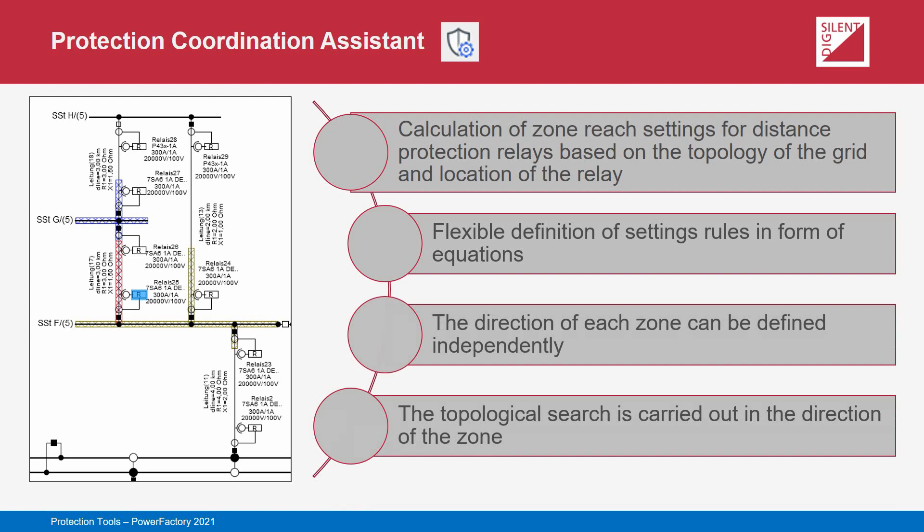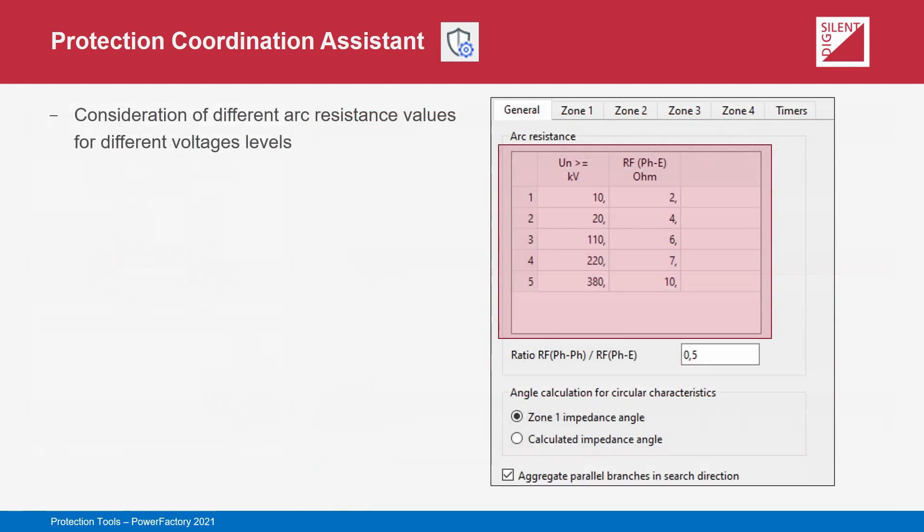For each zone, an operating direction is independently specified and this direction also determines the direction of the topological search. The search needs to be able to determine which relays are expected to coordinate with one another, and this is identified from an orientation setting associated with the CTs supplying each relay. The Protection Coordination Assistant process is carried out in two parts. During the first step, the coordination setting rules are defined, the topological search is carried out, and the settings are calculated. During the second step, the calculated settings are reported and accepted settings are transferred to the relay model.